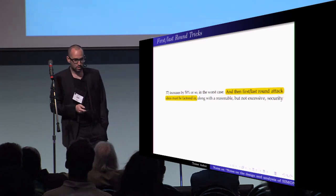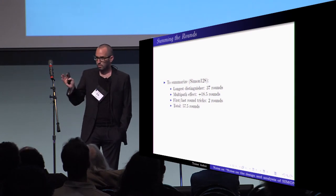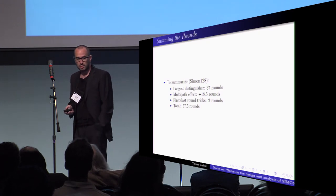And then first and last round ideas must be factored in. So if we total these numbers, we see that the longest distinguisher for, I took Simon 128, but I could have taken any other version.